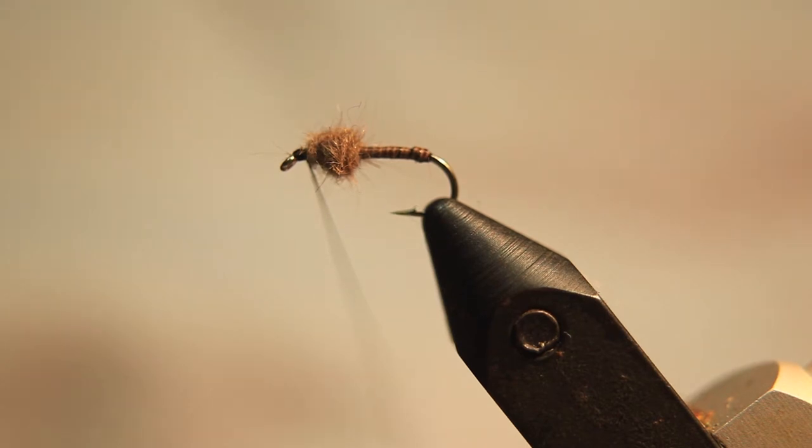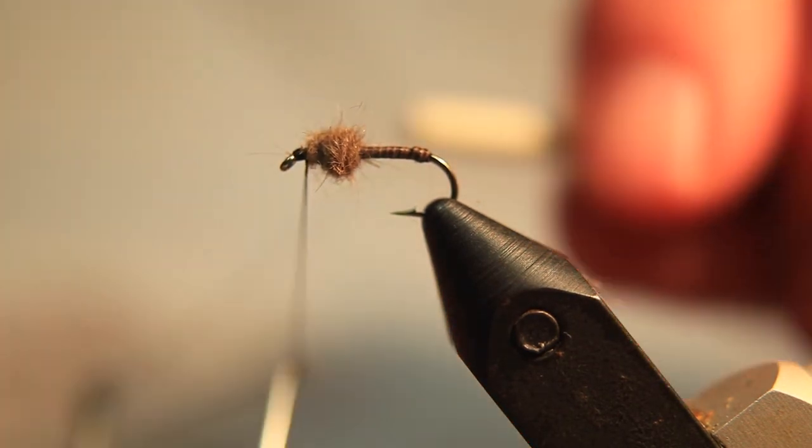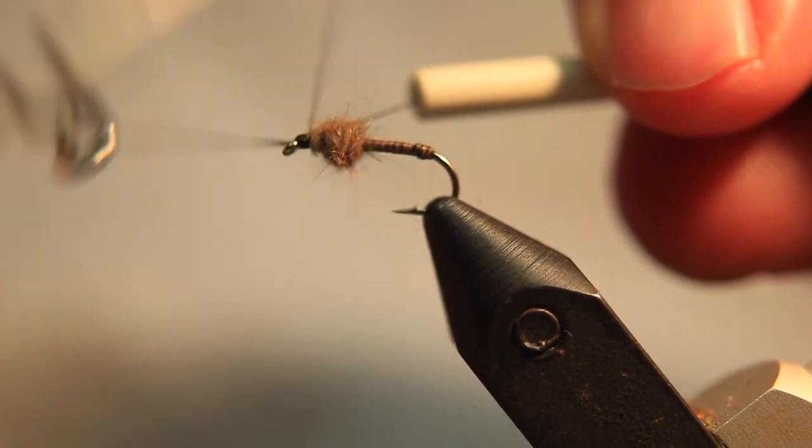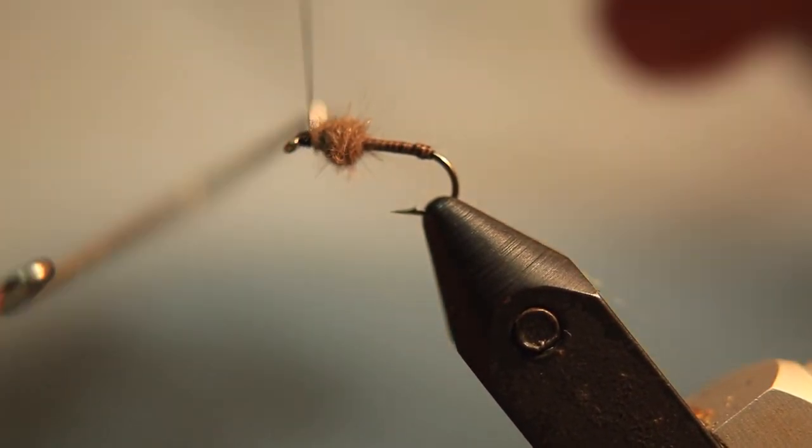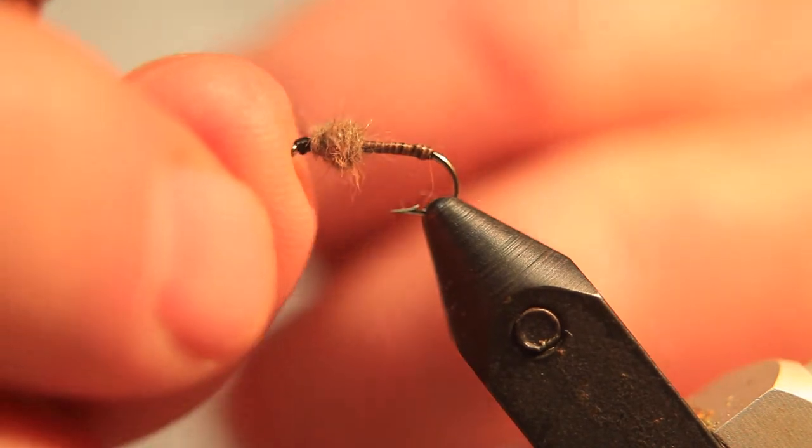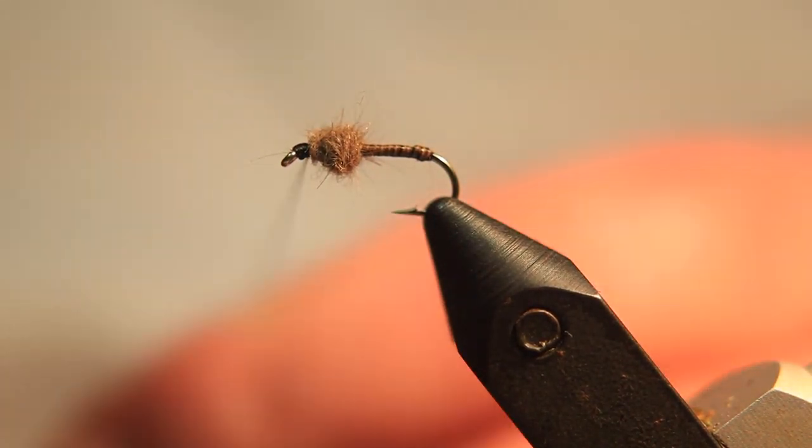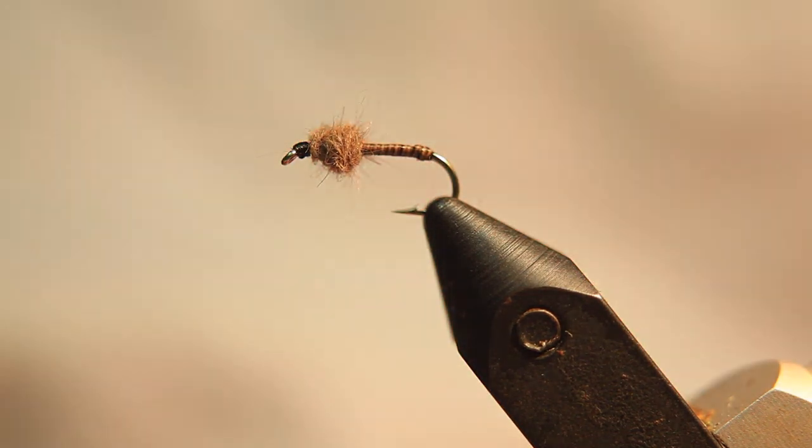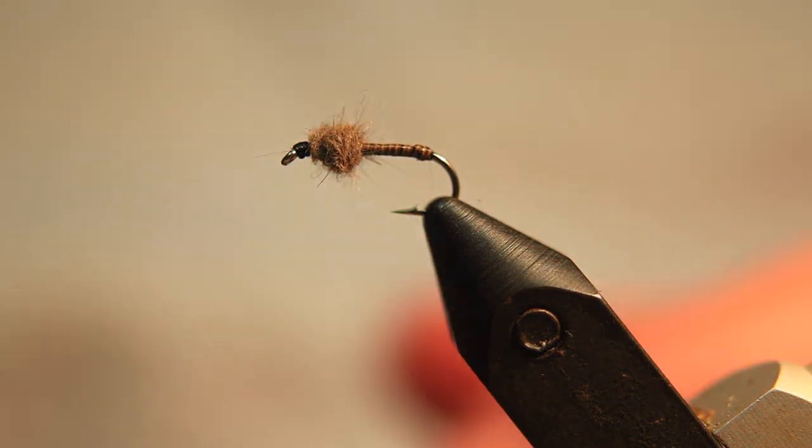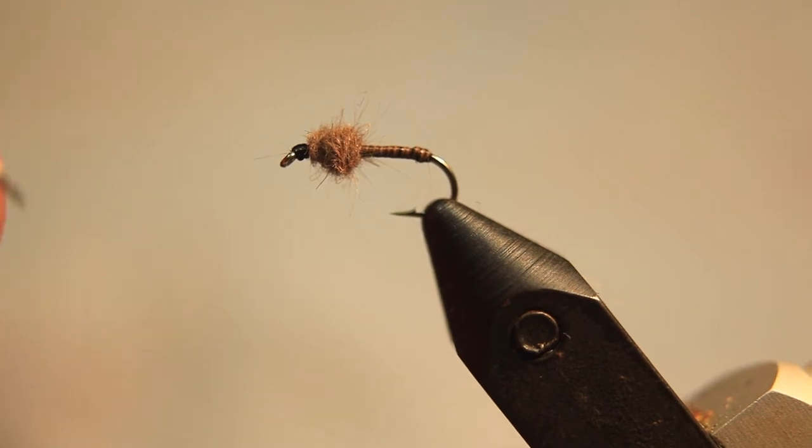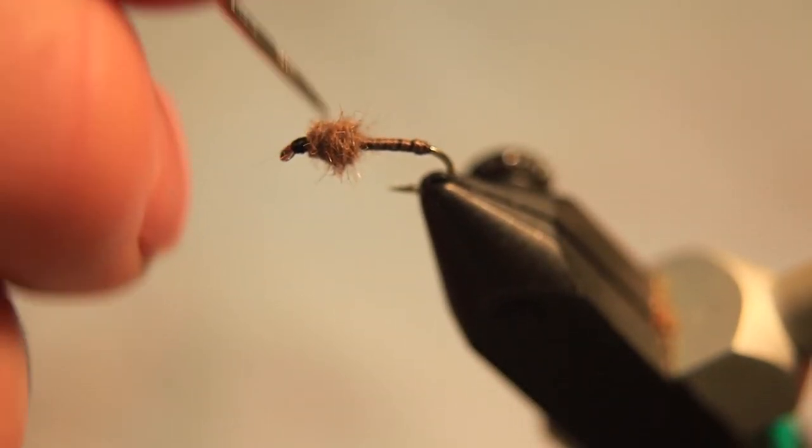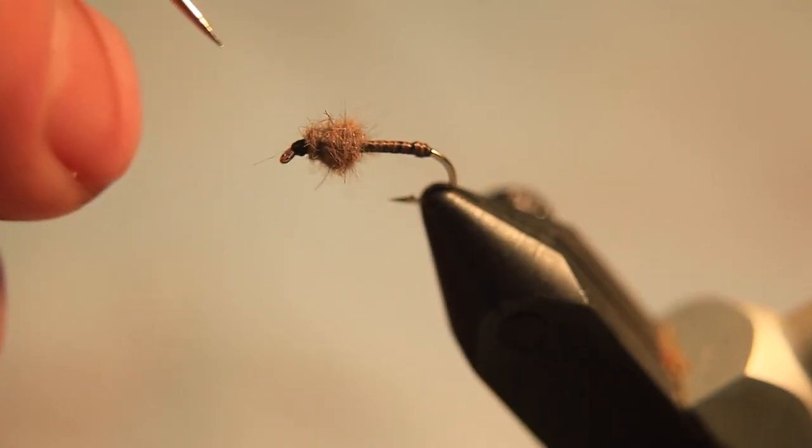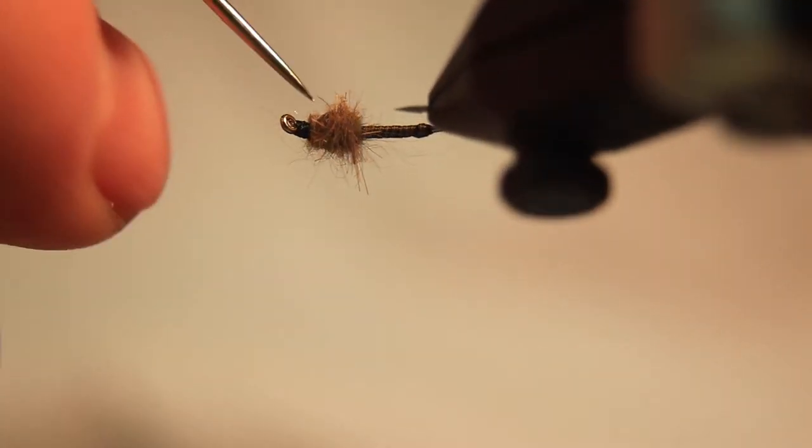Now I just need to whip finish the fly and cut the thread off. Now what I like to do is just get my needle and prick out a bit of the fibres in the thorax just to add a bit of life to the fly.